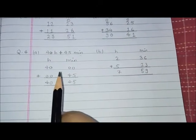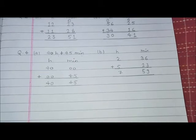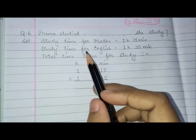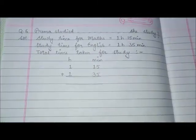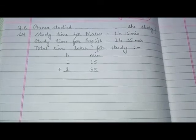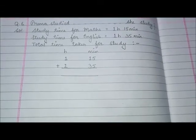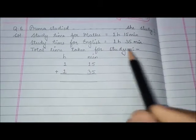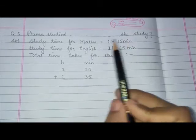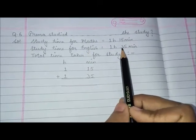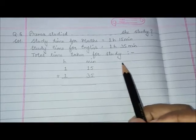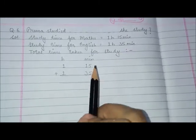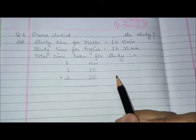You don't have to do question number 4 C part and question number 5 C part. Next we are going to do addition word sums. Question number 6: Prema studied maths for 1 hour 15 minutes and she studied English for 1 hour 35 minutes. How long did she study? We have to find the total time taken for study.